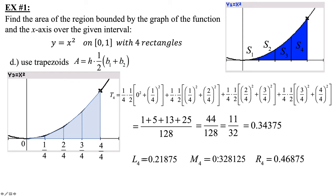General rule of thumb: if you have a small number of rectangles and want to be really accurate, try to eliminate the overestimation — too much area above the curve — and the underestimation — not enough area under the curve. Midpoint and trapezoid will do that; they fill in those corner areas in your change-in-X intervals.